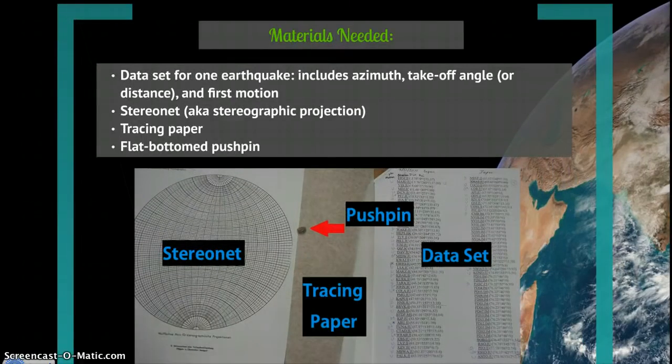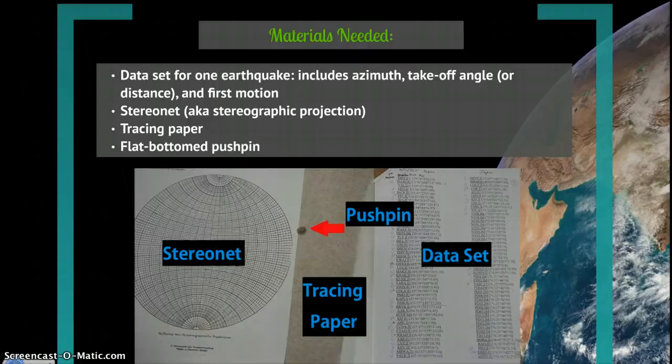The materials you'll need are a data set from a particular earthquake, which includes the azimuth that the wave travels, the takeoff angle of the P wave, or the distance from the seismic station to the earthquake's epicenter. Either of those could be used, and the P wave's first motion.